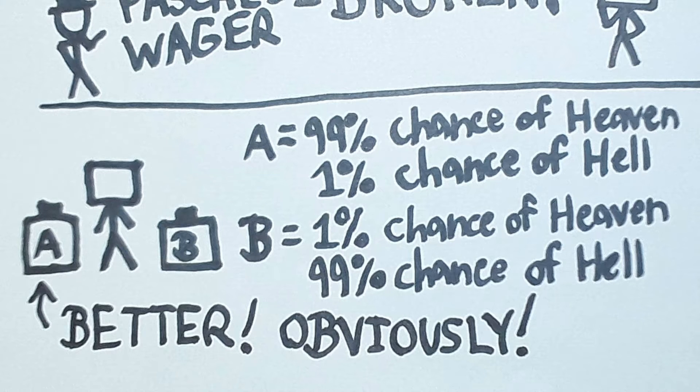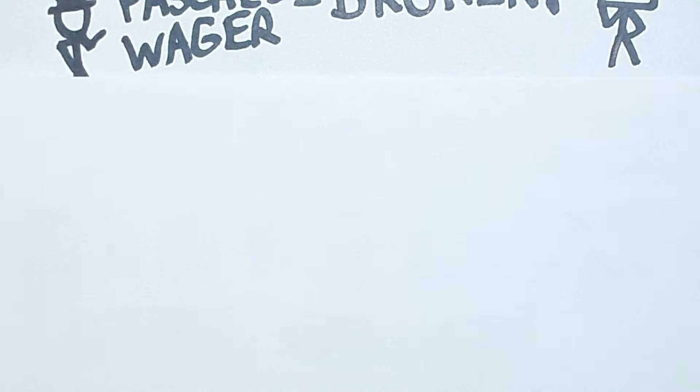So we should come up with some framework of analyzing our options so that we could actually be able to deduce that button A is better than button B. And once we have that framework, maybe we can use this to patch Pascal's wager.